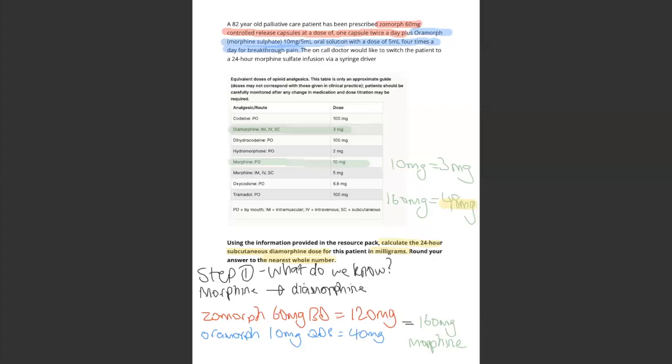Hi guys, welcome back to question 36. This one is an example of where a patient is taking morphine and they are being converted to diamorphine. So with this one, what we need to do is calculate a total morphine first and then compare it and calculate the equivalent dose.